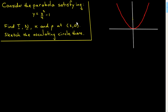In this screencast, I'm going to consider the example of a parabola. Consider the parabola satisfying this equation — the set of points (x, y) satisfying this equation. You're asked to find the tangent and normal vectors, the curvature and the radius of curvature, all at the point (2, 0), which we can verify lies on this curve. Then you're asked to sketch the osculating circle at that point. A very typical question in this subject.